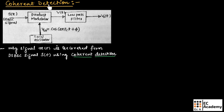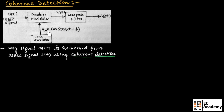It consists of a product modulator which multiplies the DSBSC signal S of T and a locally generated sinusoidal signal from a local oscillator. This multiplied signal V of T is passed through a low-pass filter to produce the required message signal. For proper recovery, the local oscillator should produce output synchronized with the carrier wave C of T generated at the transmitter end — meaning the same frequency and phase. Such type of detection we call coherent detection.